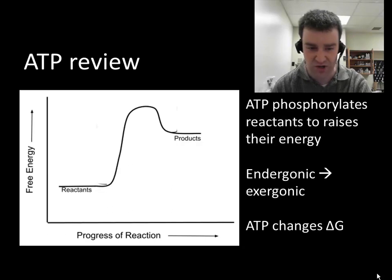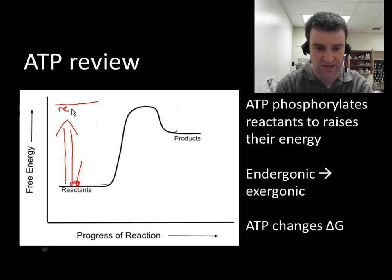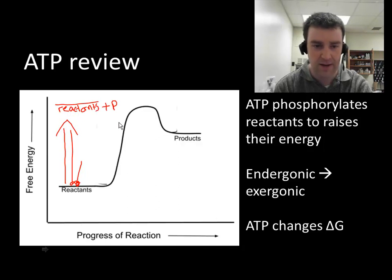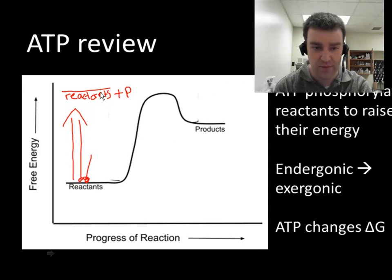ATP can help turn an endergonic reaction exergonic by phosphorylating the chemical reactants. So when chemical reactants are phosphorylated, that greatly increases their energy level. So I want you to imagine that this is sort of like the reactants with a phosphate attached. And then ATP loses a phosphate and becomes ADP. And when the reactants are then phosphorylated, the whole energy profile changes.